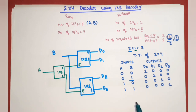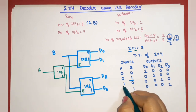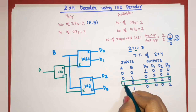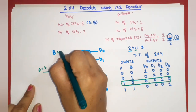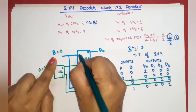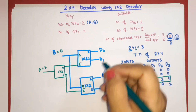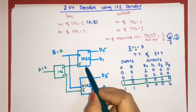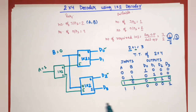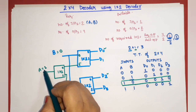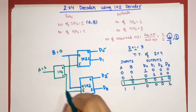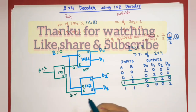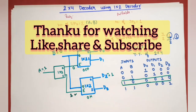Now let me justify which output is high. Suppose we apply the combination A=1, B=0 — we should get D2 high. With B=0, input 0 is applied to both second-level decoders, so both select their D0 output. But A=1 means the first-level decoder's output 1 is high and output 0 is low. So the first decoder is disabled and the second decoder is enabled. Therefore the high output comes from the second decoder's D0, which is D2. This confirms the design is correct.